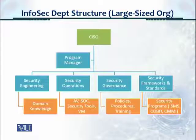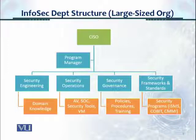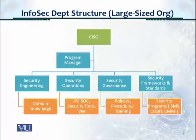This slide shows those functions. Security engineering is domain knowledge. Security operations covers antivirus, running a security operations center, and running security tools. In security governance, we look at policies, procedures, compliance, and audit activity. For security frameworks and standards, we would look at ISMS, COBIT, and CMMI, for example.